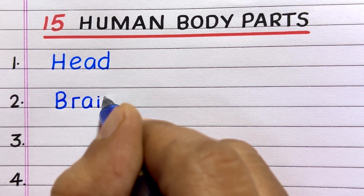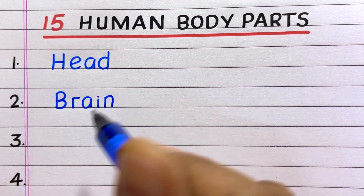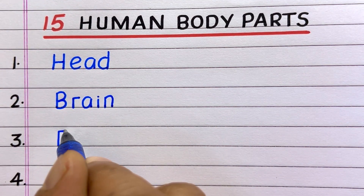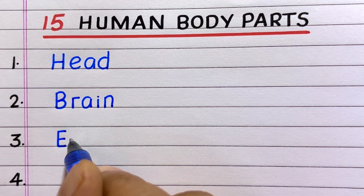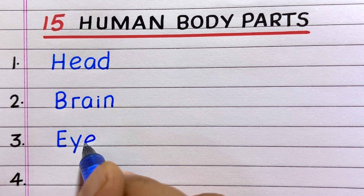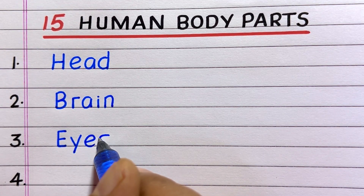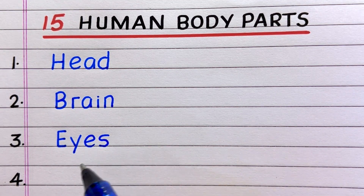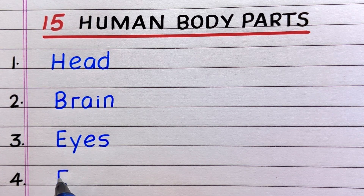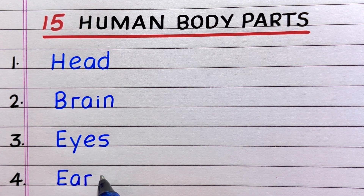Name of the first human body part is head, second brain, third eyes. Fourth, ears.